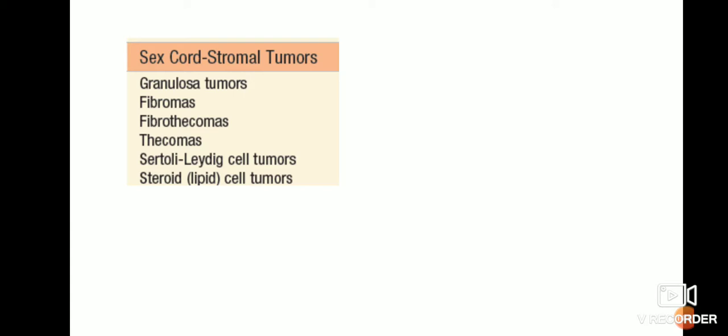Another important category of ovarian tumor is the sex-cord stromal tumors. It consists of granulosa cell tumor, fibromas, thecomas, fibrothecomas, Sertoli-Leydig cell tumor, and steroid cell tumors. Recalling the normal histology: the stroma of the ovary consists of granulosa cells, fibrous cells, theca cells, and Sertoli-Leydig cells, and hence any of these cells can give rise to a tumor.